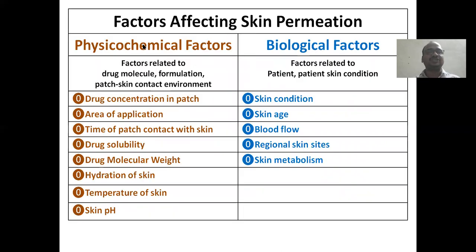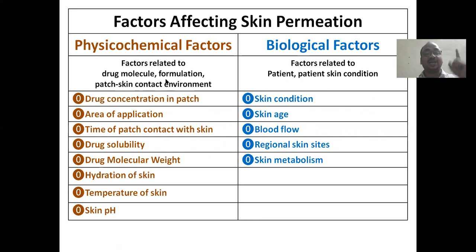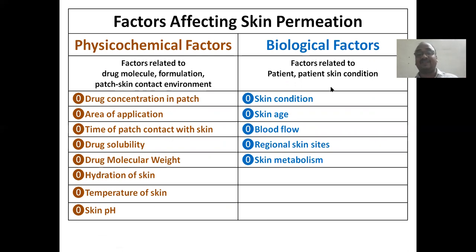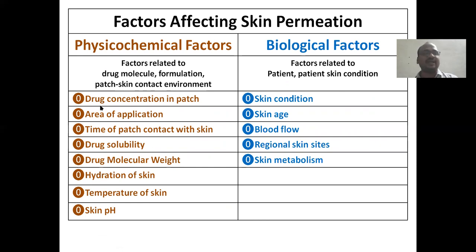Factors affecting skin permeation are of two types: physicochemical factors — related to the drug molecule, drug formulation (patch), skin contact, and environment — and biological factors, which are related to the patient and patient skin condition. We will now go through each one by one.